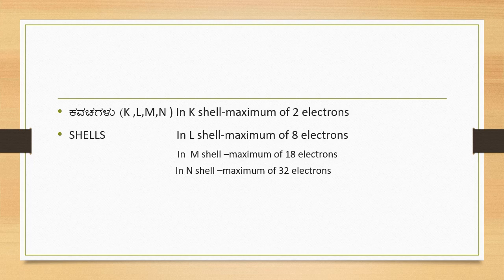In K shell, the first shell surrounding the nucleus, a maximum of two electrons can accommodate. In the S sub-shell, only a maximum of two electrons can accommodate. So in K shell or S orbital, maximum two electrons can accommodate. In the second shell L, there are two sub-shells S and P. The S orbital holds maximum two electrons.